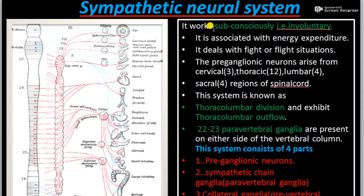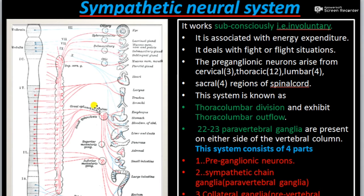The sympathetic neural system works subconsciously or involuntarily — it is not under conscious control. It comes to the rescue during fight-or-flight situations, where a person has to fight with the situation or run away from it. During those conditions, the sympathetic neural system acts. It is an energy-consuming or energy-expenditure process.